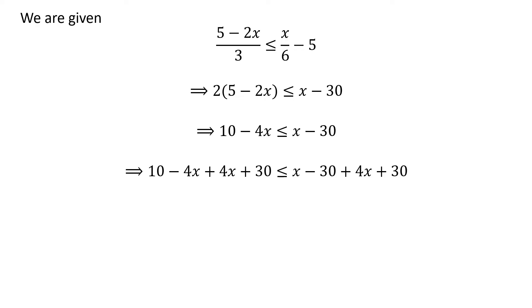Adding 4 times x and 30 to both sides of the inequality does not change the inequality. Simplification of the above inequality gives us 40 is less than or equal to 5 times x.